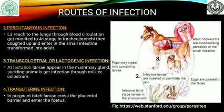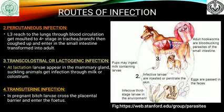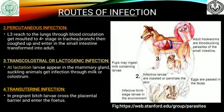The second route of infection is percutaneous infection. In this case, the L3 larvae migrate to the lung through blood circulation and moult to stage 4 in the trachea and bronchi, then are coughed up, enter the small intestine, and transform into adults.